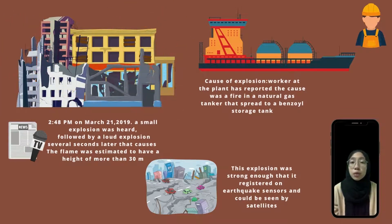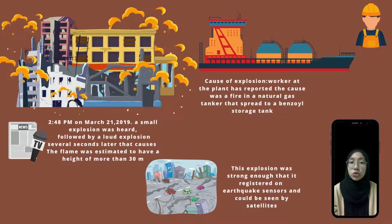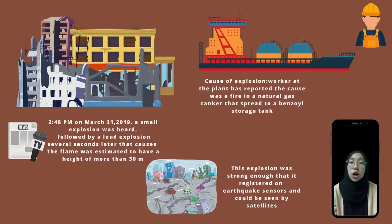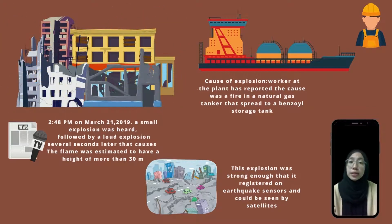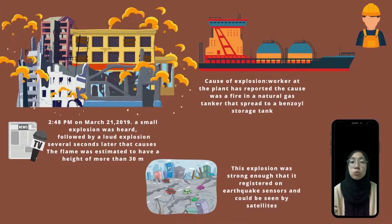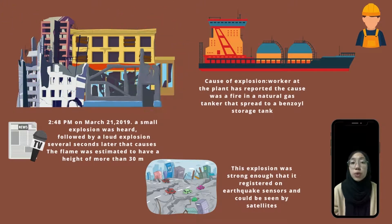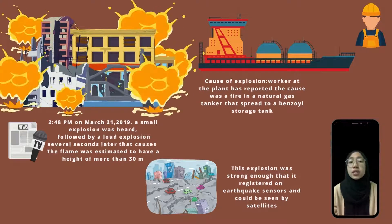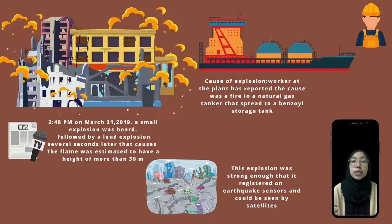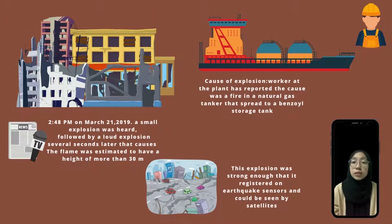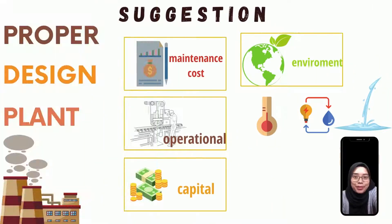The explosion caused 70 to 80 people to be killed, 94 people were injured, and 32 people were critically injured. A total of 607 patients were hospitalized across 60 hospitals in Yancheng City. There were no reports of anything abnormal at the plant before the explosion, but a worker reported that the cause was a natural gas tank that split into a benzene storage tank, though this has not been confirmed. On 4 April 2019, the Standing Committee of the Yancheng Committee of the Communist Party of China held a meeting and decided to definitively close down the chemical industry park.